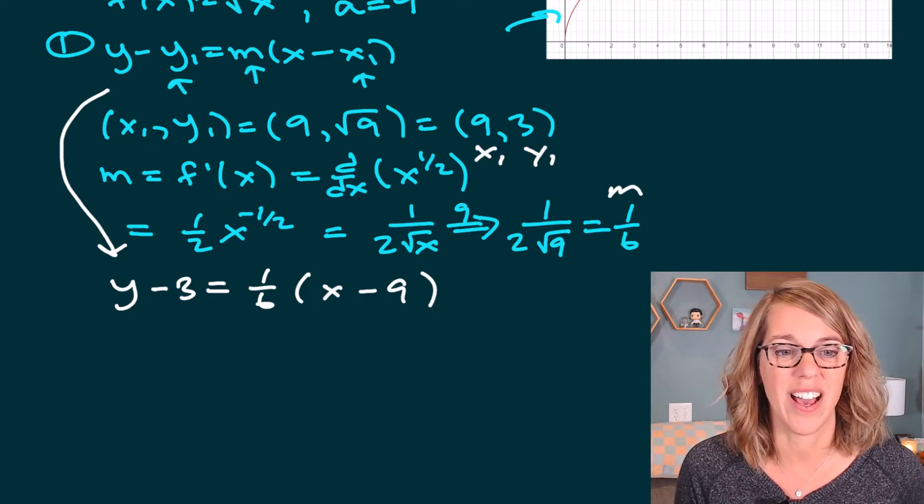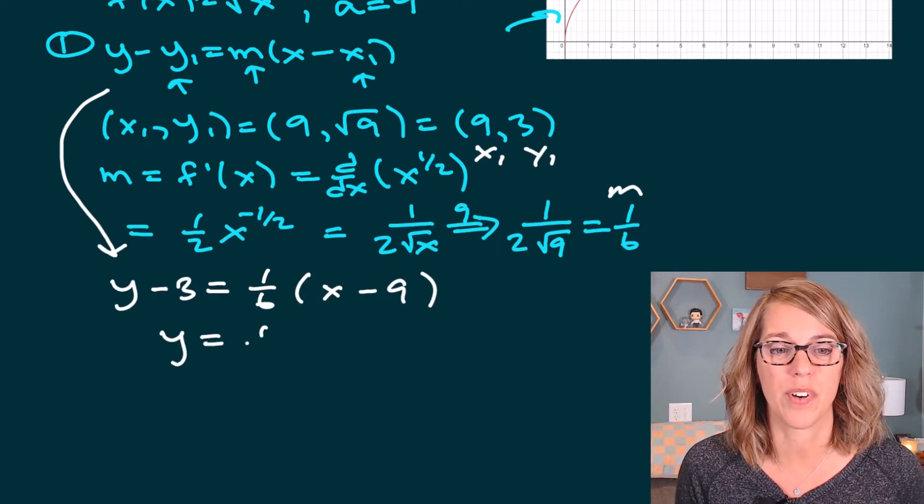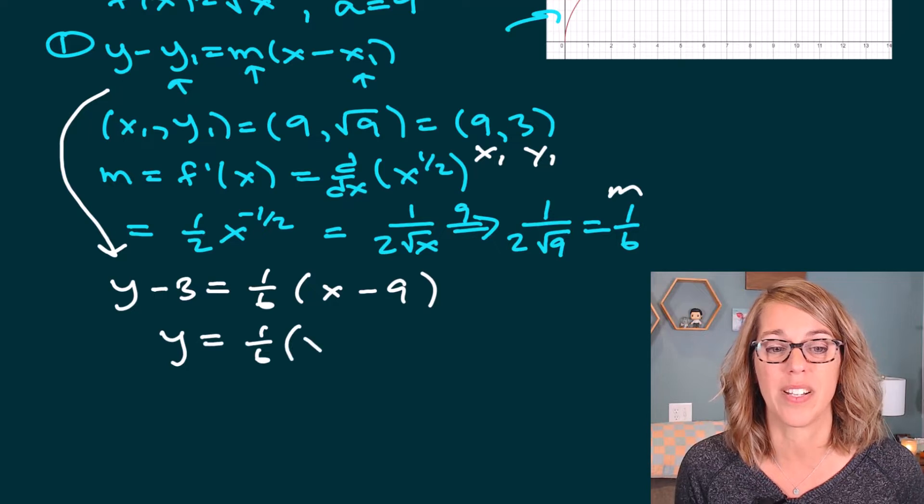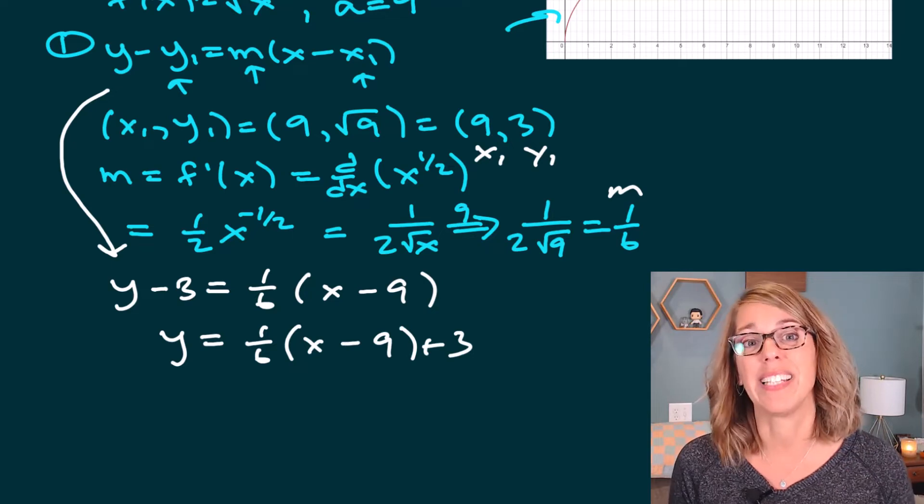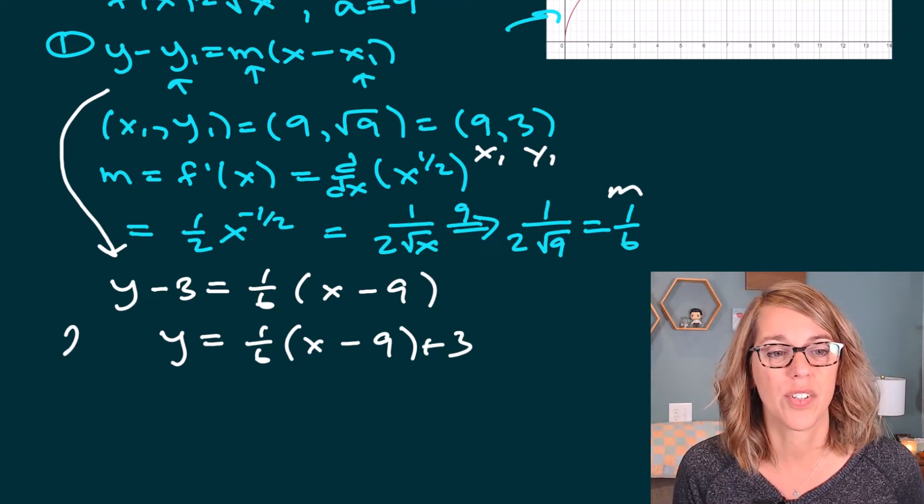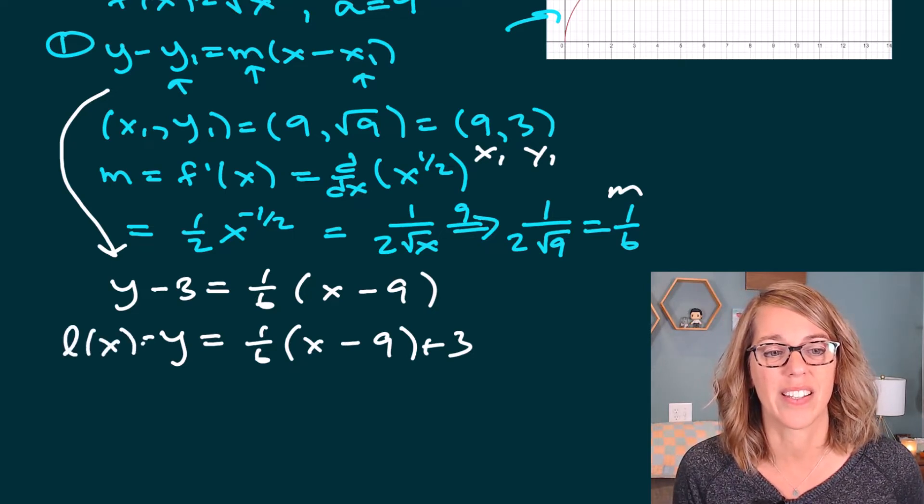Now I'm not going to change this a lot. Instead, I'm just going to move the 3 over. I'm not going to bother to distribute that 1/6 through. And I end up with this as my linearization, so we can also name this L(x).